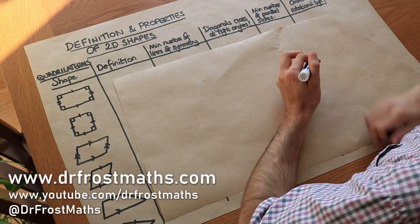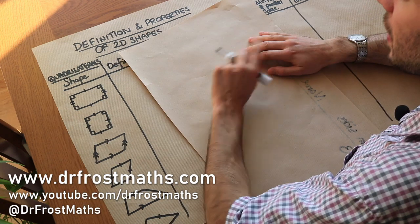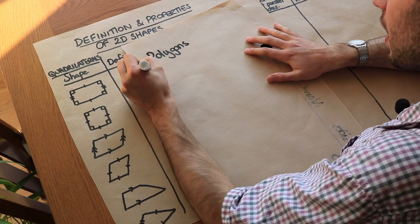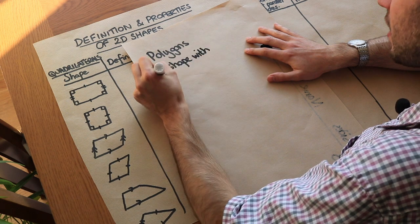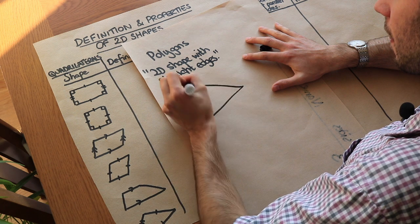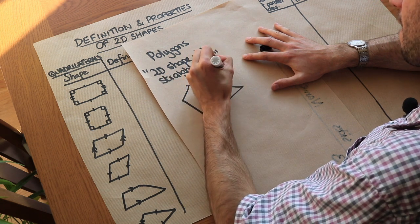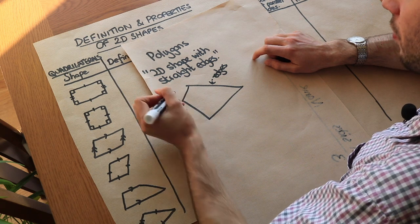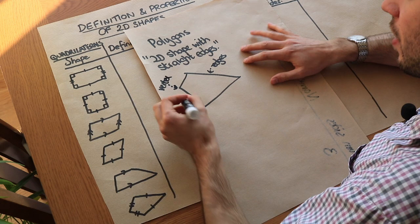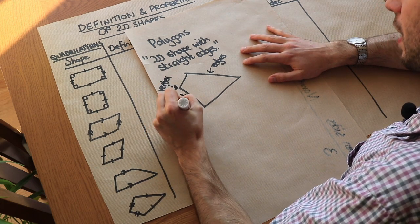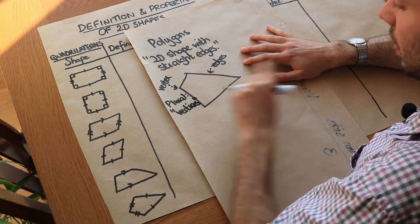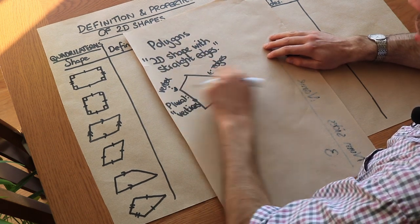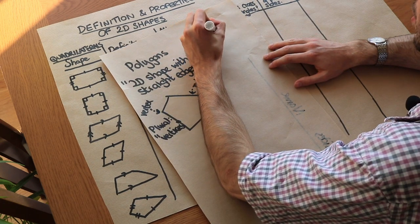Welcome to this video on the definition and properties of 2D shapes. Let's first consider two different types of 2D shapes. You can have polygons, and the definition of a polygon is a 2D shape with straight edges. Each of the corners of a polygon is called a vertex, and the plural of vertex is vertices, spelled v-e-r-t-i-c-e-s. So we have edges, which are the lines, and vertices, which are the corners.